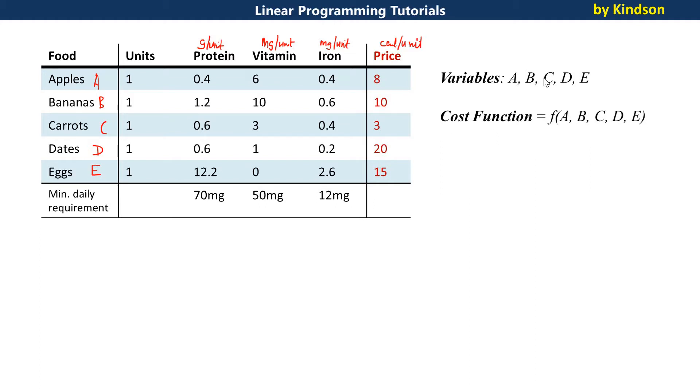The cost function is a function of the variables. If you identify the variables, then the cost function is a function of the variables. Let's try to determine this cost function together. The cost function is what we need to minimize or maximize. At this point, we are trying to minimize the cost. When we eat certain quantity of apple, banana, carrot, dates, and egg, it is equivalent to a particular amount. When we eat apple, the price is 8 cents per unit. So apple is going to cost us 8 cents, let's call it 8A.